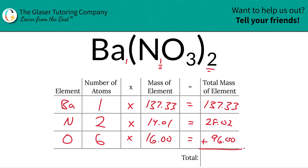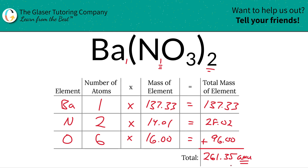To find the total mass of the compound, just add those up. The result is 261.35. Since we're finding molecular mass, the units are in AMU, or atomic mass units. That's it — now you know how to find the molecular mass of barium nitrate. We have thousands of videos out there covering chemistry, physics, and math. We'll see you in the next one. Take care.